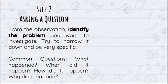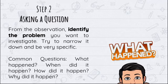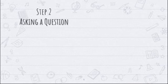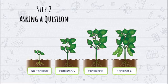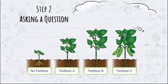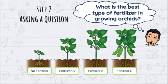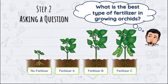Given the situation and our observations about three fertilizers, we don't know yet which one is effective. Our common questions will be: What happened? What will happen if I apply those fertilizers? When did it happen? How did it happen? And why did it happen? We start to formulate different questions in our minds. In our situation, we can say that if we apply no fertilizer, it won't have enough effect on our plant. But if we apply different types of fertilizers, we'll see different results. We are not yet sure which of the three is most effective. Therefore, our question is: What is the best type of fertilizer in growing orchids? After observation, we formulate our problem. This is a testable problem — meaning we can conduct an experiment to solve it.